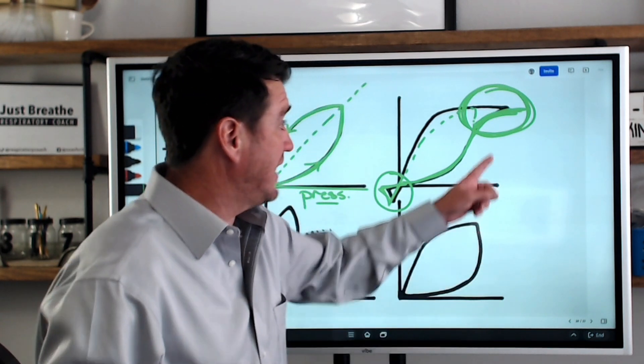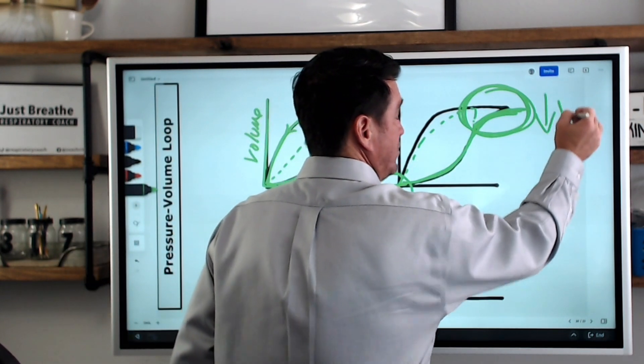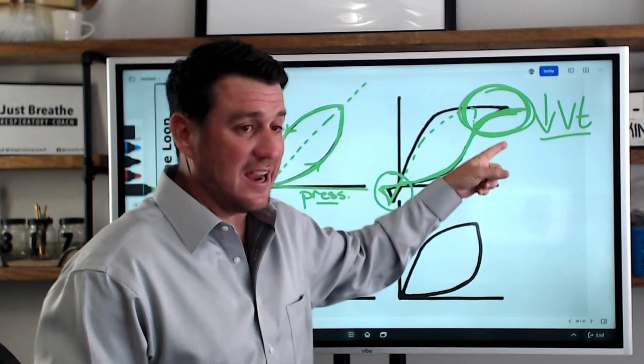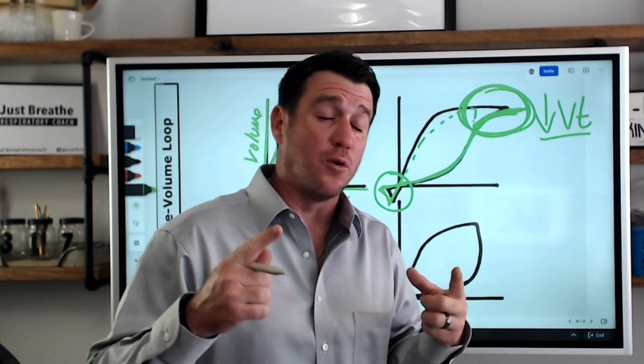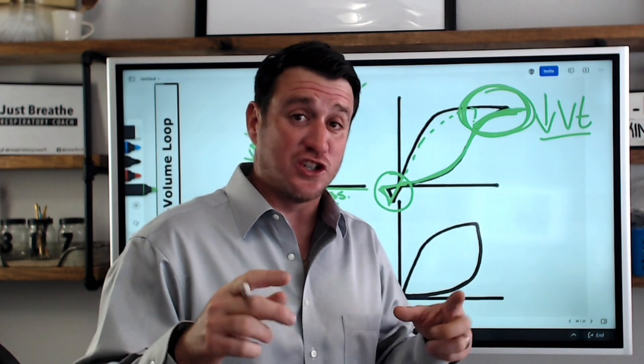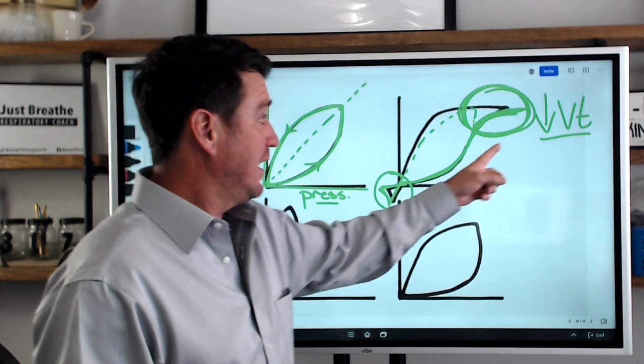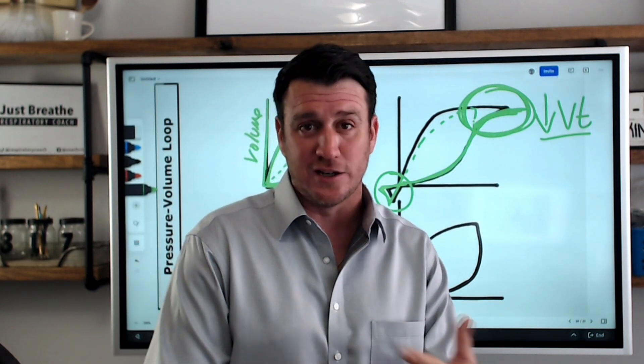It's telling you that your tidal volume is too high and we need to reduce tidal volume for this patient in this scenario. Those are two of the findings you're going to want to be really clear and sharp to pick up on. Sensitivity on the backside, tidal volume and overdistension on the front side of this loop.